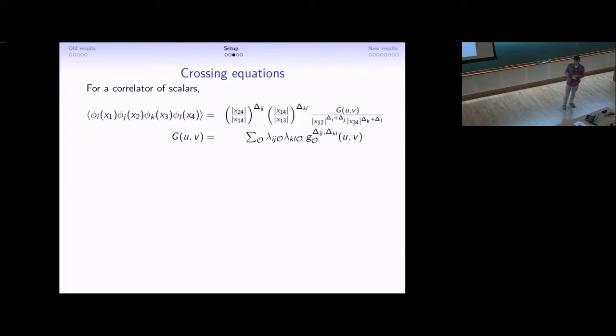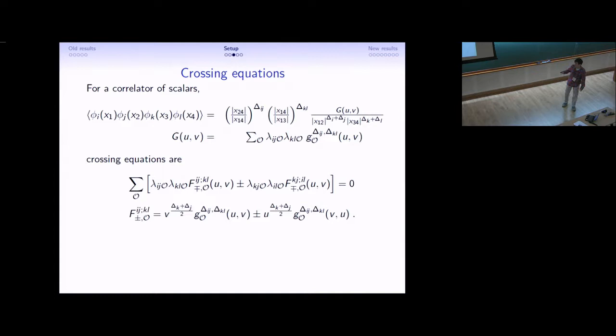Then we want to make this equivalent to the same evaluation in a different OPE channel. So we would permute the labels until we get a T-channel expression and then set them equal to each other. When the dust settles, we end up with crossing equations which look like this, in terms of functions F plus and F minus, which have come to be called convolved conformal blocks.